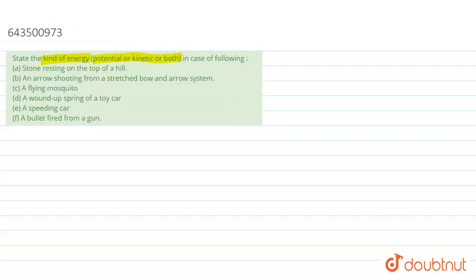Before answering this, let's understand basic things about potential and kinetic energy. So what is potential energy? Potential energy is energy stored in any object due to its position. Potential energy is due to position.